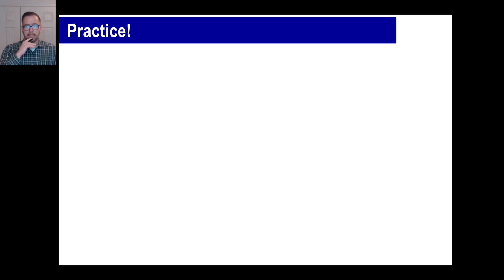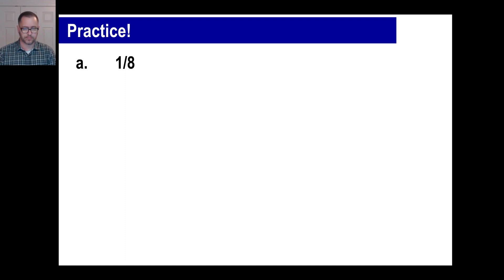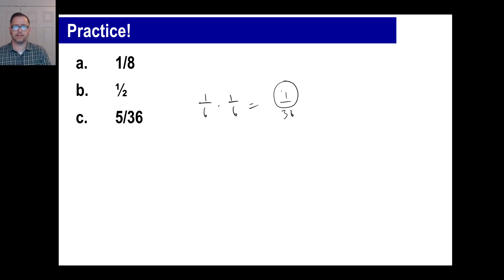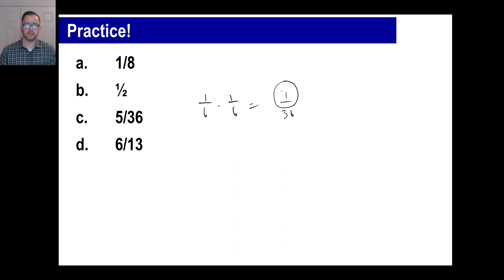Try your practice problems. A is one out of eight — one half times one half times one half. B is one out of two. C is five out of 36 — there are 36 total outcomes when rolling a die twice, and five matching outcomes. For D, in a deck of cards there are 13 cards per suit: two through ten is nine cards, plus jack, queen, king, and ace makes 13. The answer reduces to six out of thirteen.